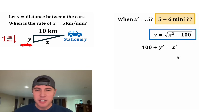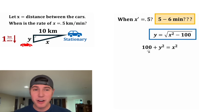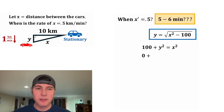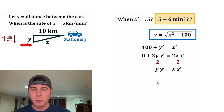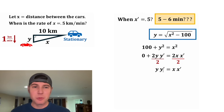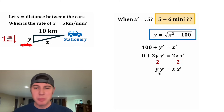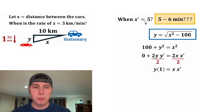This is where the calculus starts. We're going to take the derivative of both sides of the equation with respect to time. The derivative of 100 is 0. The derivative of y squared is 2y times y prime, and the derivative of x squared is 2x times x prime. Dividing both sides by 2 gives yy prime equals xx prime. Now y prime is the rate at which y grows, which is a fixed rate of 1 kilometer per minute, so we plug in 1 for y prime. And we want to know when x prime equals 0.5, so let's plug in 0.5 for x prime.